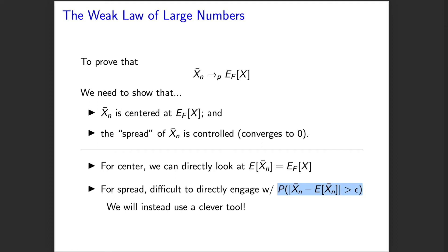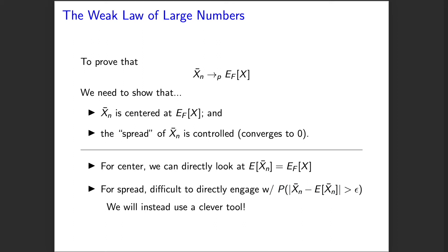This is a very common thing in statistical theory — sometimes you can do direct calculations, but often you can't because convolutions and sums of random variables are difficult. So you use another tool that is easier to calculate and find a result relating that easier quantity to the quantity you're actually interested in.